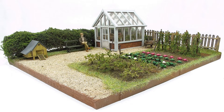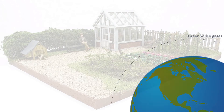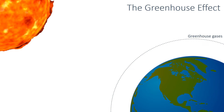The Earth and its atmosphere have been compared to a greenhouse. The layer of greenhouse gases, such as carbon dioxide, methane and water vapour in the atmosphere, trap heat in, maintaining temperatures on Earth high enough to support life. This is a brief description of how the greenhouse effect works.